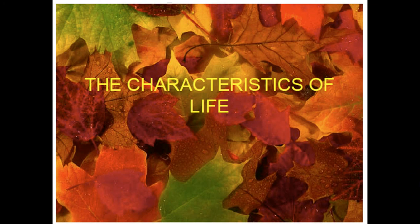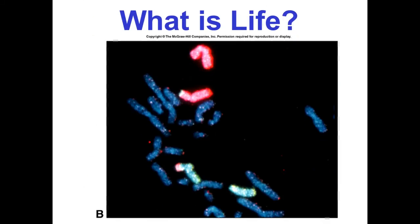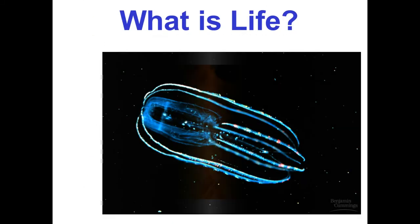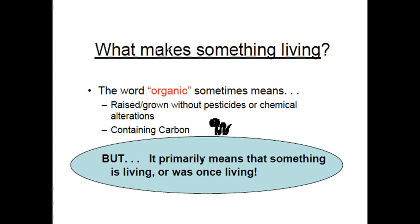The characteristics of life. If you remember nothing else this year in biology, this is key. You should be able to figure out if something is living or non-living by knowing the six characteristics that all living things have. Let's start by thinking about what exactly is life. We're going to use the word organic. Sometimes that means raised or grown without pesticides or chemical alterations, sometimes that means containing carbon, but for biologists it primarily means something that is living or was once living.